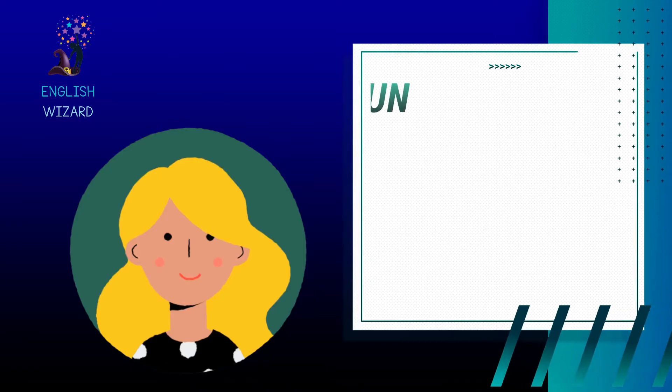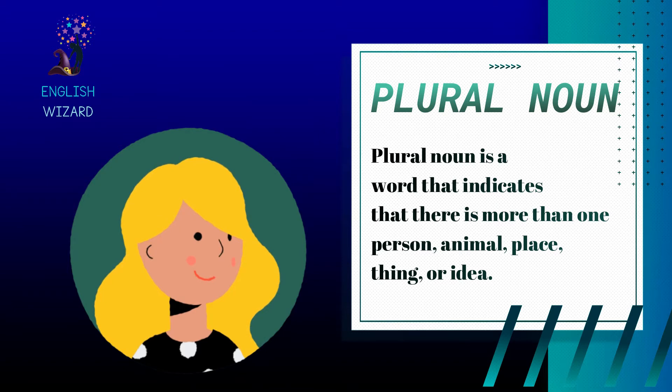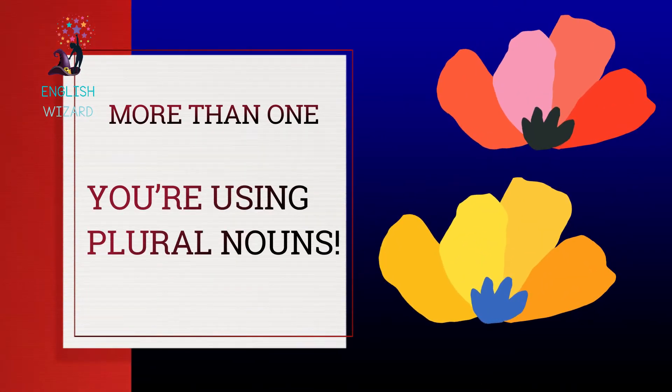Rules in Forming Plural of Nouns. A plural noun is a word that indicates that there is more than one person, animal, place, thing, or idea. When you talk about more than one of anything, you're using plural nouns.